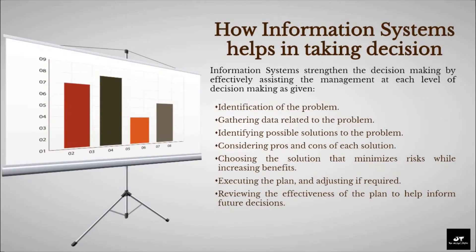How information systems help in taking decisions: Information systems strengthen decision-making by effectively assisting management at each level. Step 1: Identification of the problem. Step 2: Gathering data related to the problem. Step 3: Identifying possible solutions to the problem. Step 4: Considering pros and cons of each solution. Step 5: Choosing the solution that minimizes risks while increasing benefits. Step 6: Executing the plan and adjusting if required. Step 7: Reviewing the effectiveness of the plan to help inform future decisions.